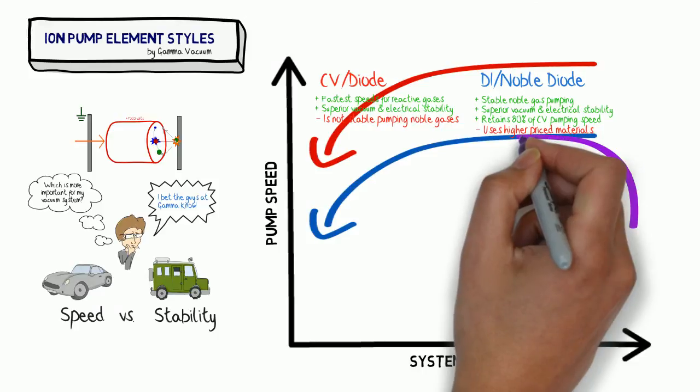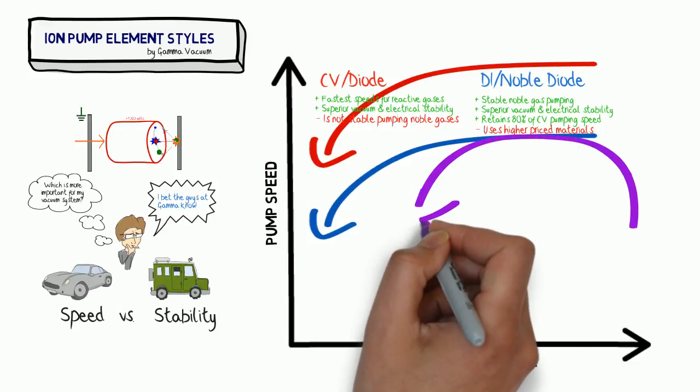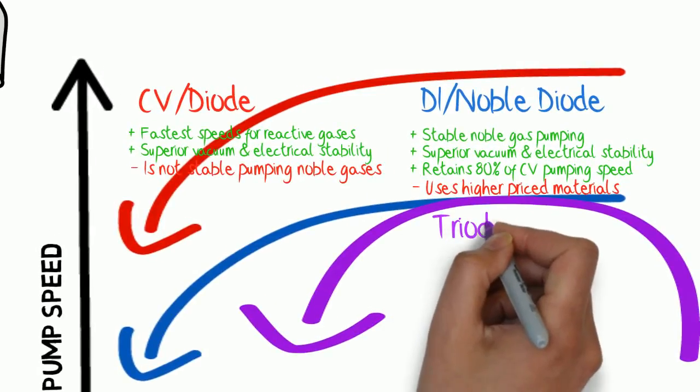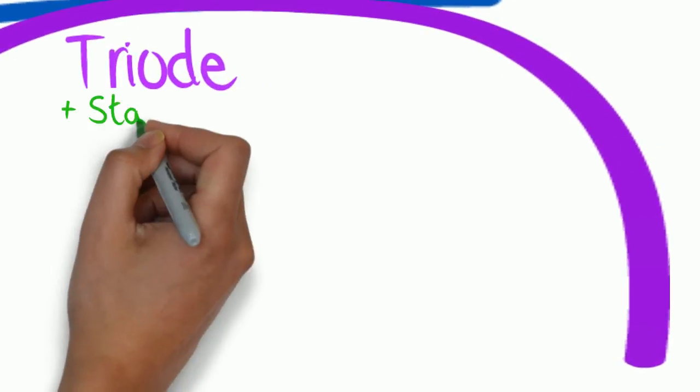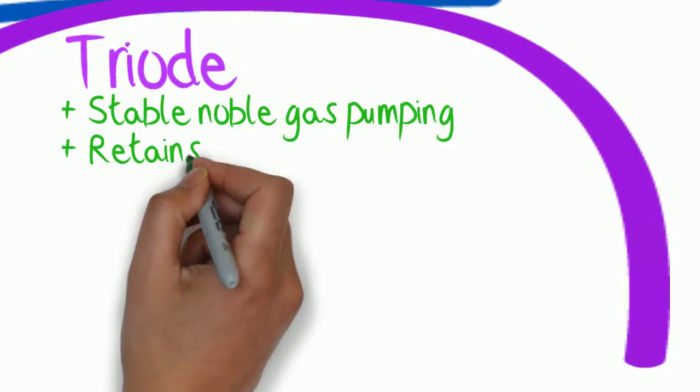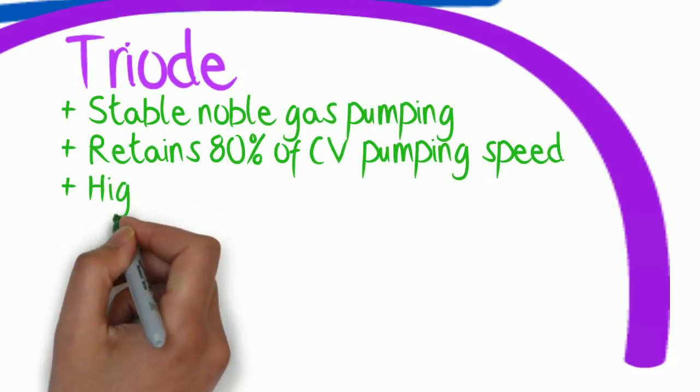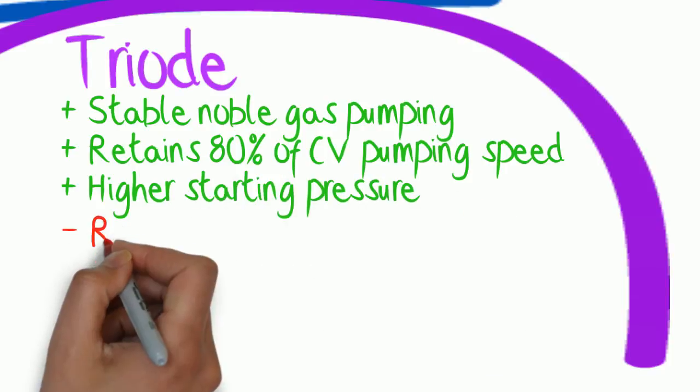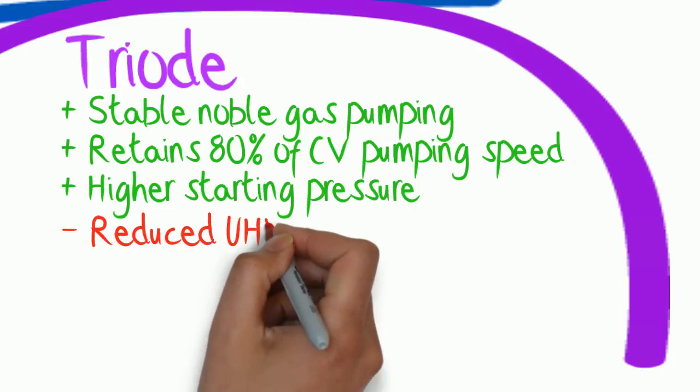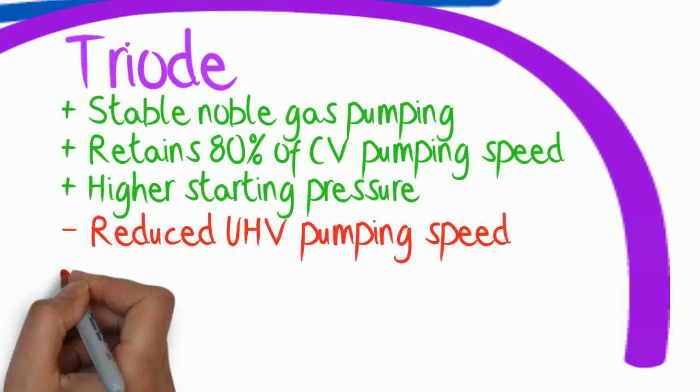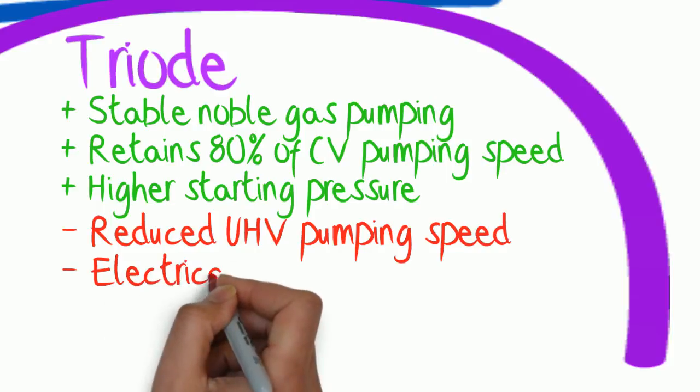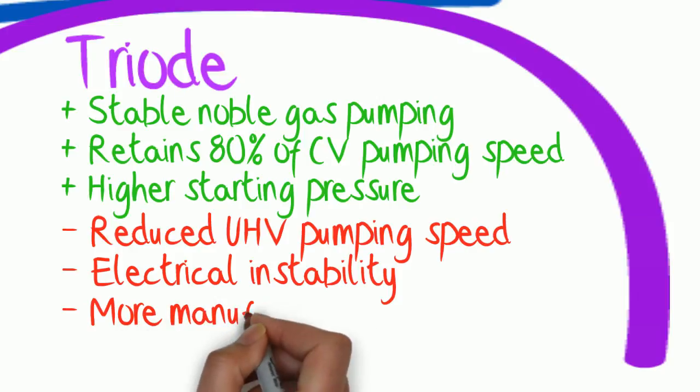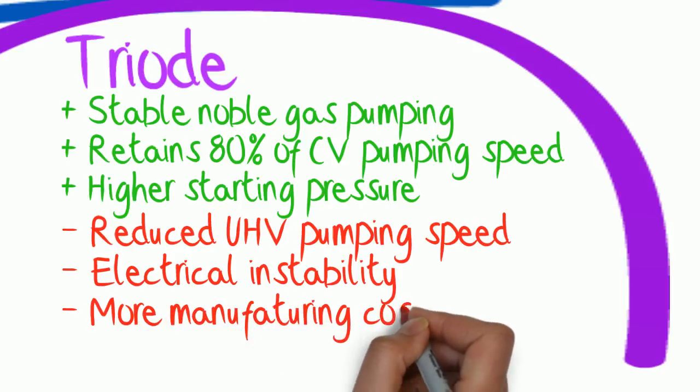Another solution to the same problem is the triode element. That triode is going to give you stable noble gas pumping, retaining about 80% of your pumping speed, and also give you the advantage of a higher starting pressure. Unfortunately, you do get reduced UHV pumping speeds and some electrical instability issues, and you also get a little bit higher-priced based on some manufacturing costs.